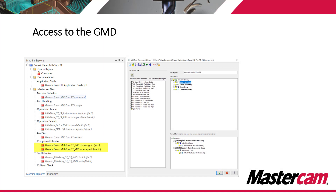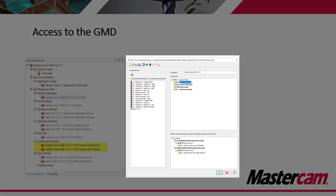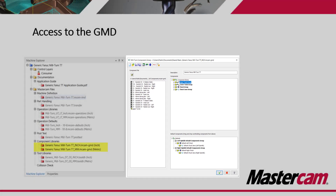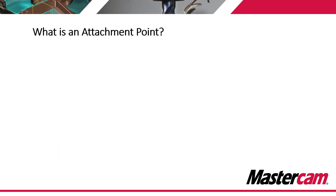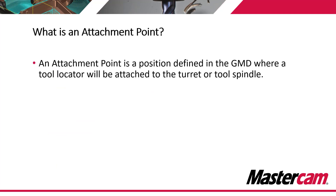Those other files can only be modified by a Mastercam reseller or Mastercam directly. On the right hand side, you can see a short preview of what the GMD looks like when we open it up. A new component manager has been made available to the end user, which allows you to modify the different tool locators in your GMD as well as modifying the chucks and jaws that are stored. An attachment point is a position that's defined in the GMD where the tool locator will attach to the turret or to the tool spindle.